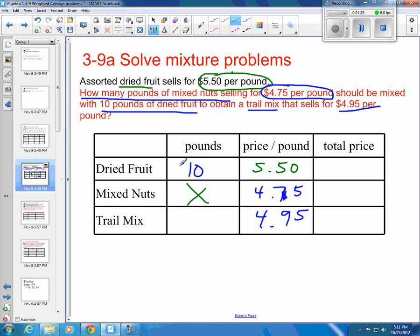Then we start filling in the different squares. If we've got 10 pounds of dried fruit, X pounds of mixed nuts, and the trail mix is when you mix the two, the dried fruit and the mixed nuts together. Since you're mixing them together, you're kind of adding them, so we're going to add these two things to get to our trail mix. This is going to be 10 plus X here.